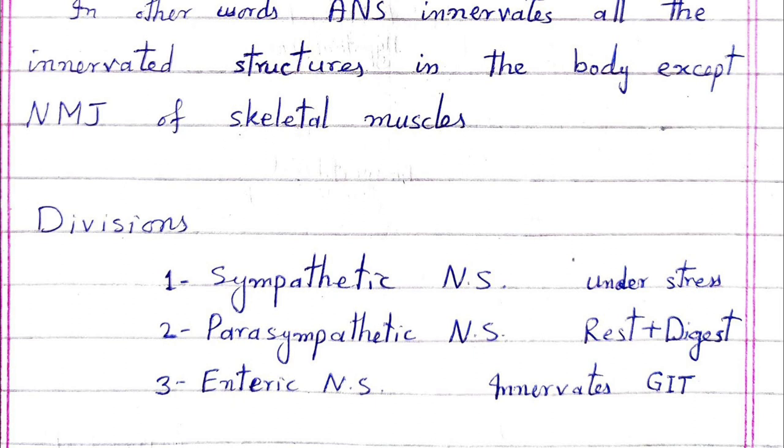There are three major divisions of the Autonomic nervous system: Sympathetic nervous system, Parasympathetic nervous system, and Enteric nervous system.